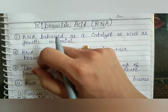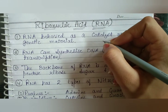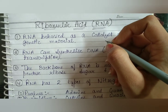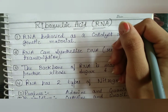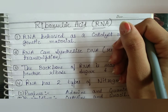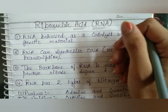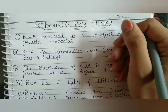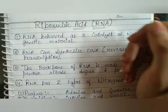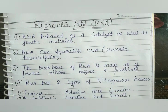Hello friends, welcome back to Biotech World. In today's video we will study about ribonucleic acid — what is ribonucleic acid? It is basically a genetic material. We have two types of genetic material: DNA and RNA. We have already discussed DNA in previous videos, so in this video we will study about RNA.